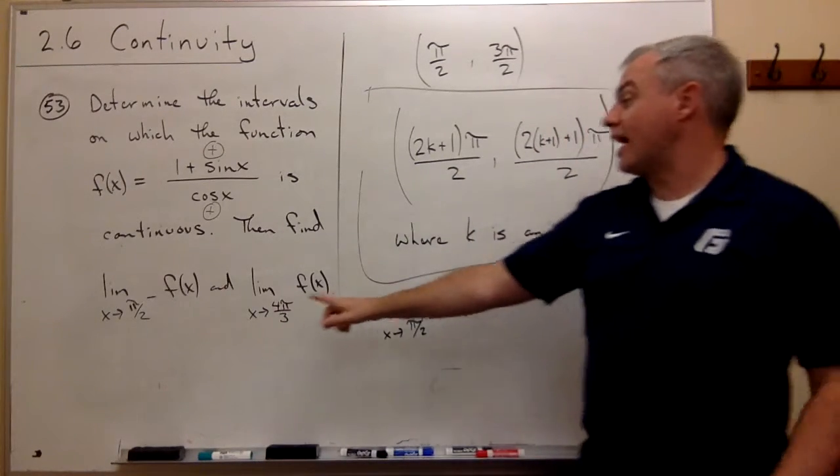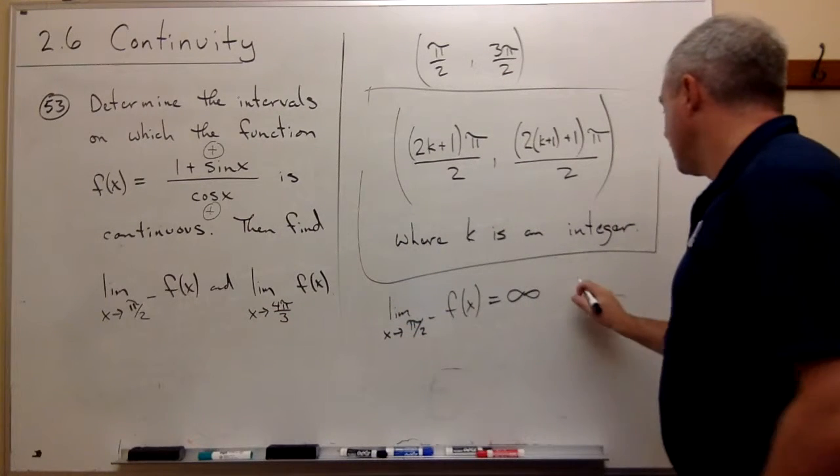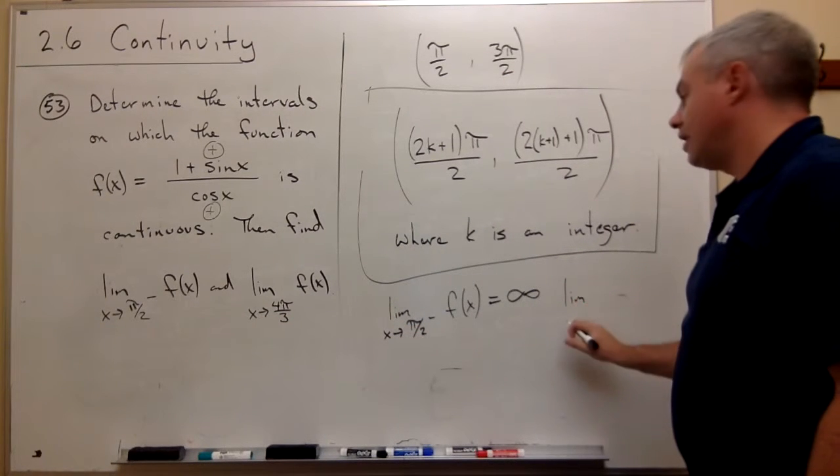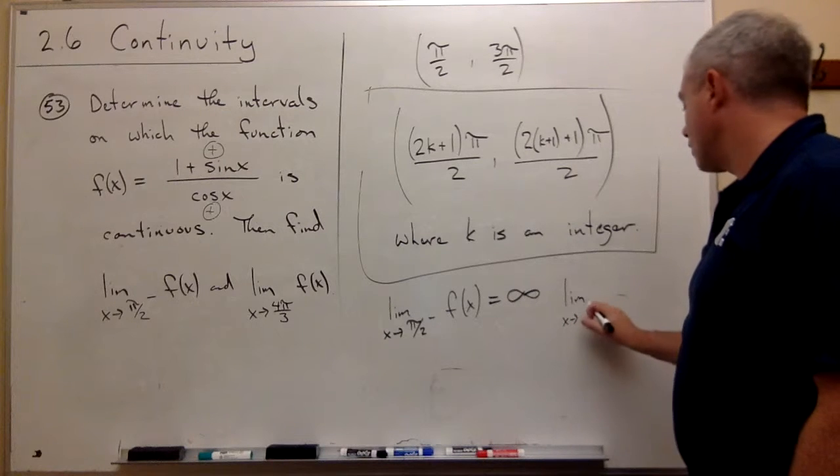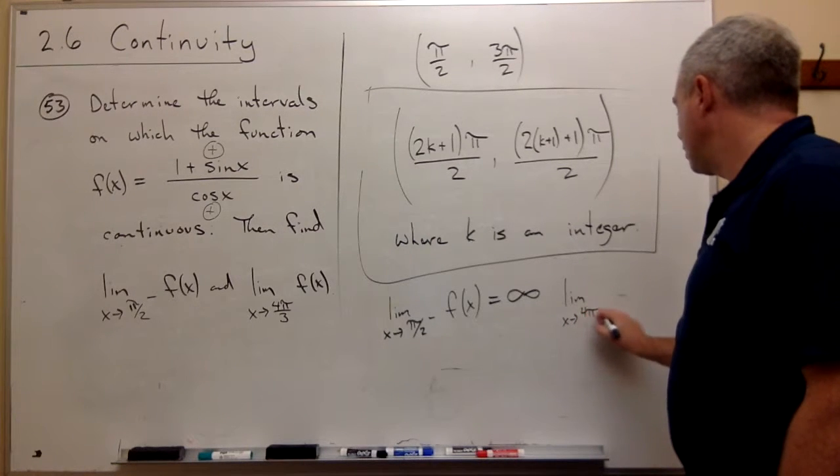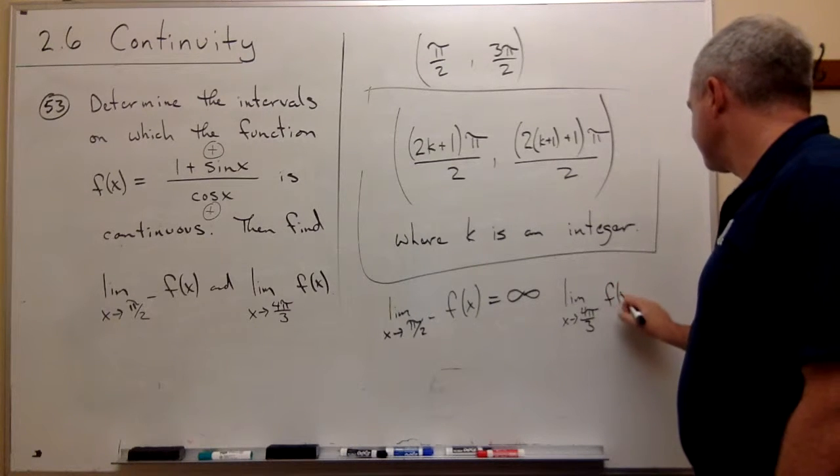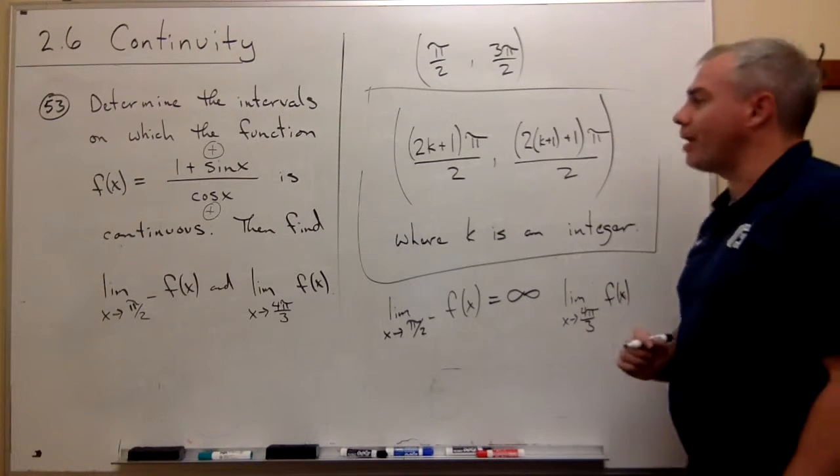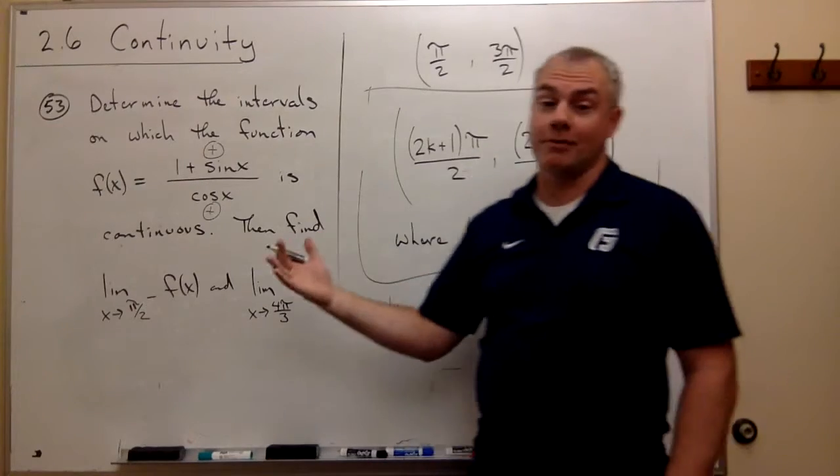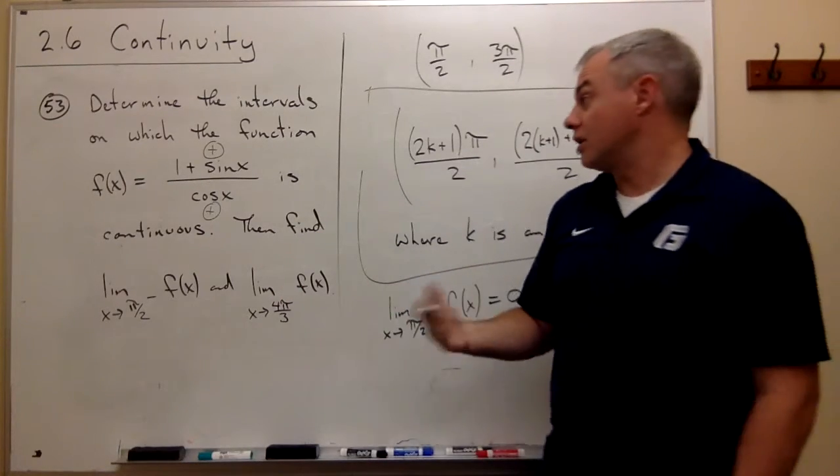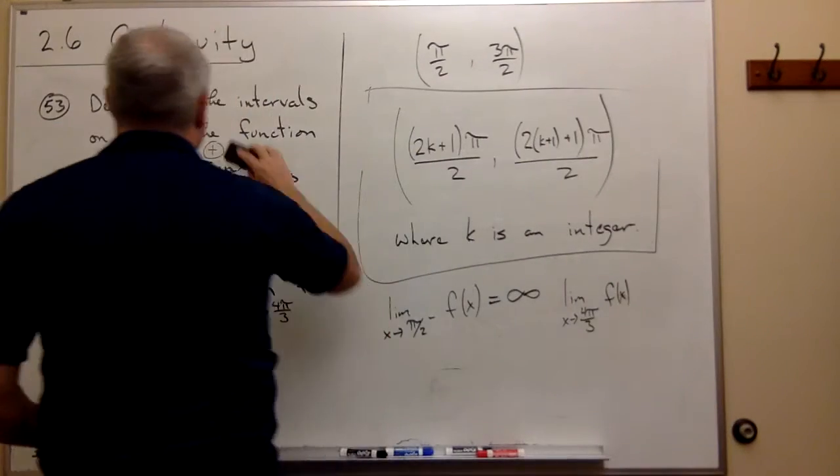Okay, so last piece of this problem is we want to look at the limit as x goes to 4 pi over 3 of our function f(x). Well is 4 pi over 3 one of the problems? The answer is no, it's not. It's not a problem at all.